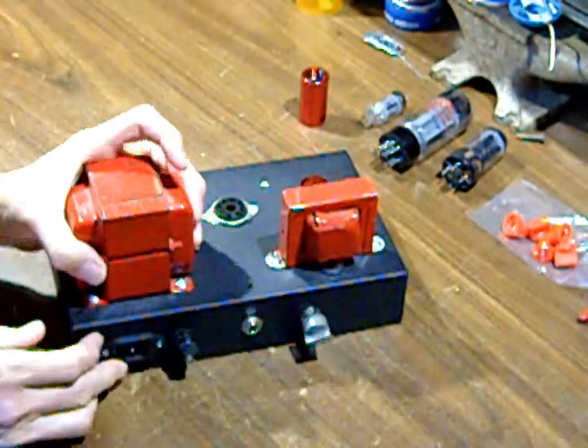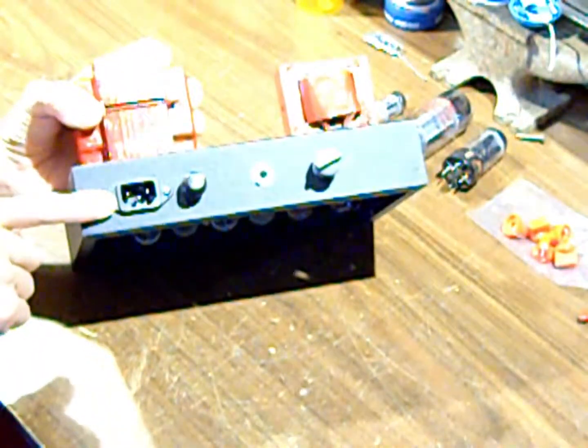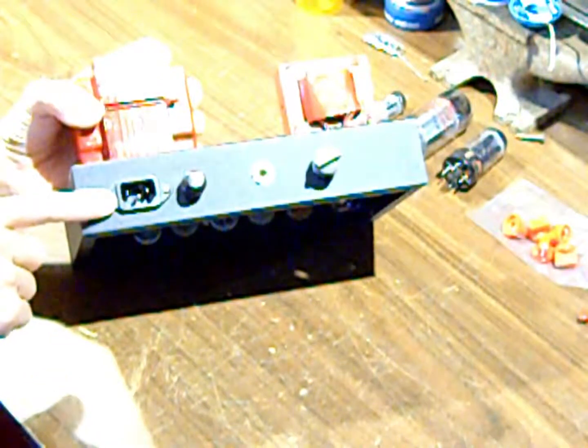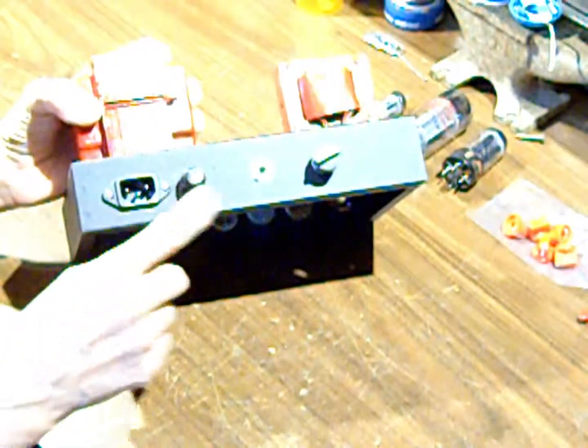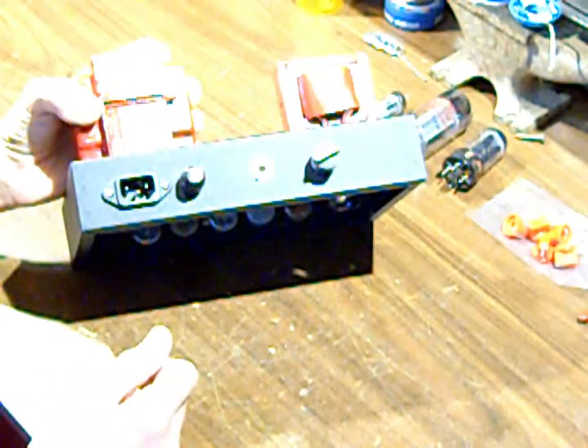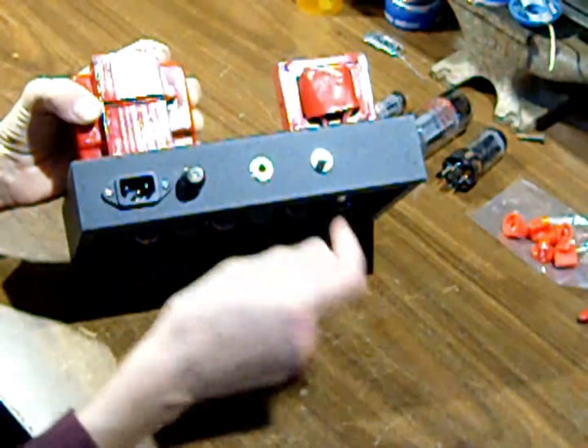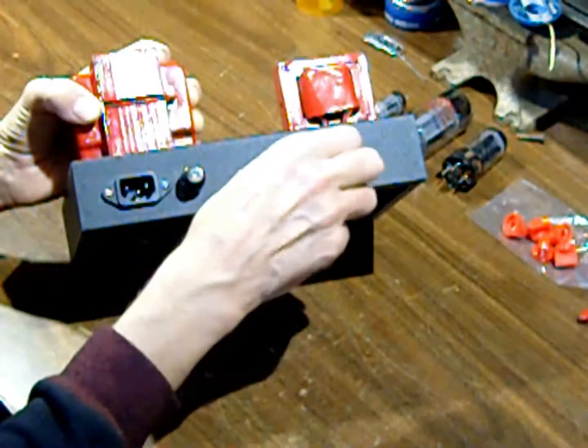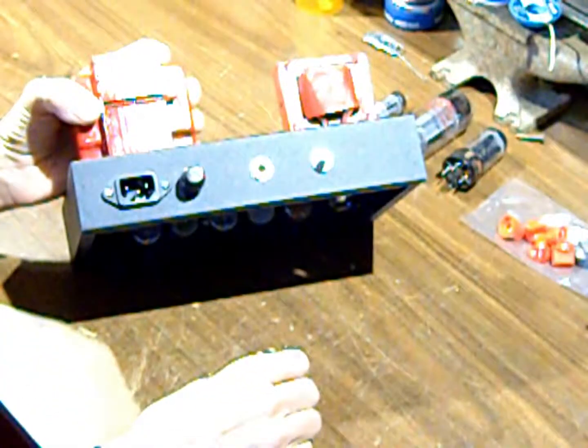Now on the back is the jack, or the socket I should say, for the power cord. The fuse. The speaker output here. I only have one speaker output on this and it's for an 8-ohm speaker. And then this is my other little control here which has a switch and control. And that's for the feedback.